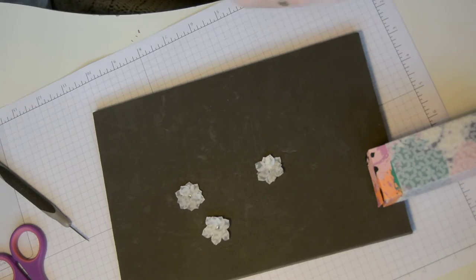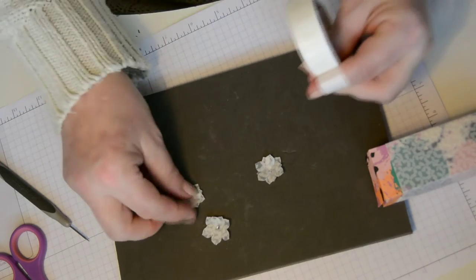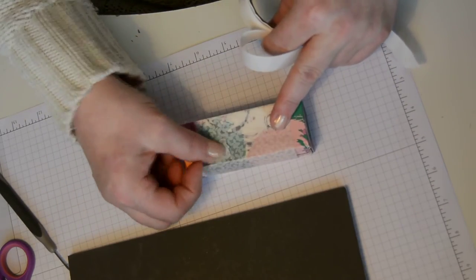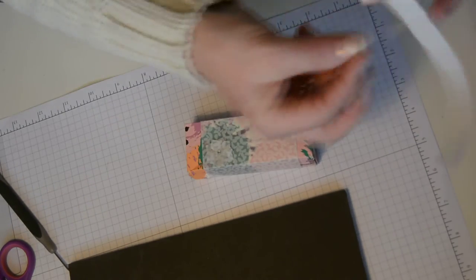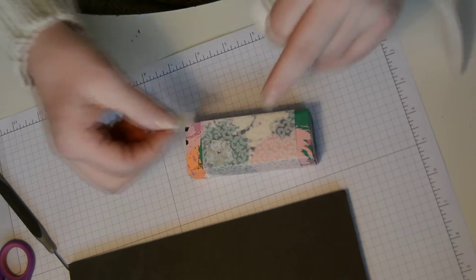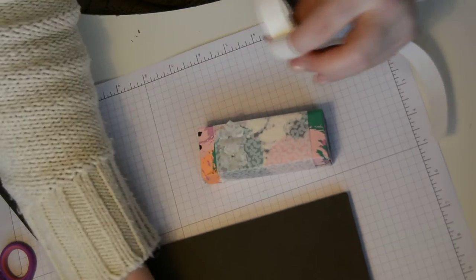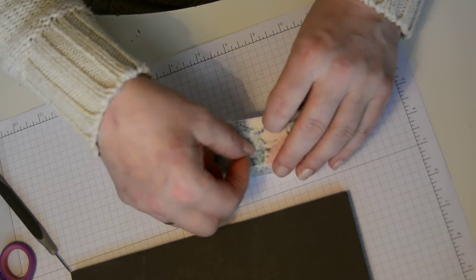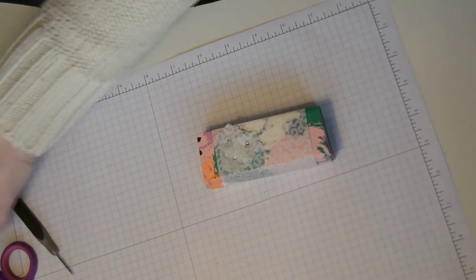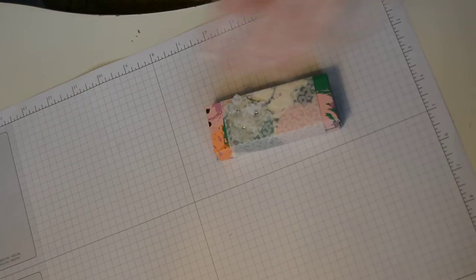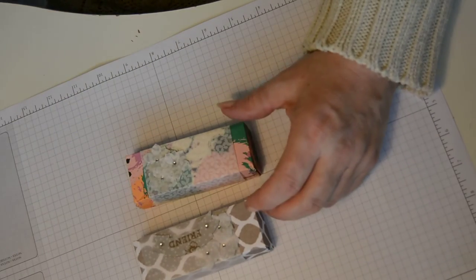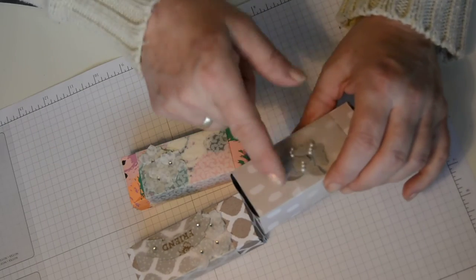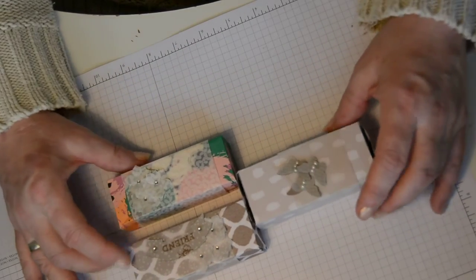And with some more glue dots, just going to pop those on the corner of your belly band. As I say, you can put a center on there as I did with this one. You can have three little butterflies with contrasting cardstock. I'll just leave it like that. Isn't that sweet. I think they're lovely, good size.